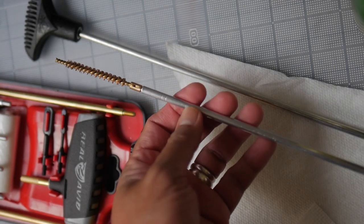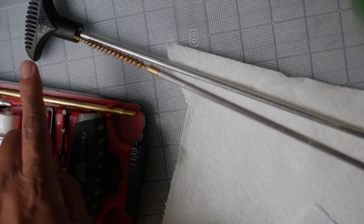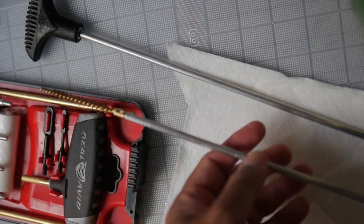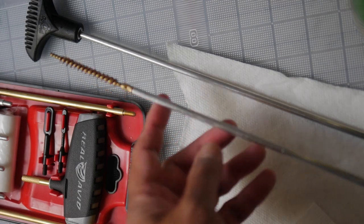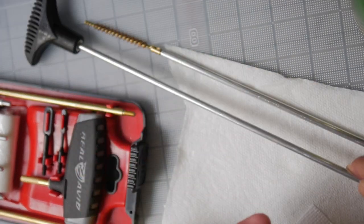All right, I have my cleaning tools here. I have a set of brass cleaning rods here for my pistol and I need a longer set for my rifle, so I got an aluminum Hoppe's brand cleaning rod set.